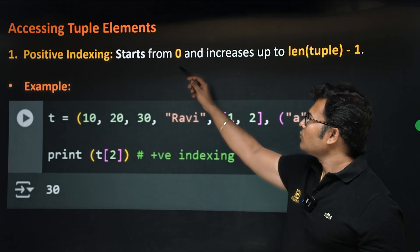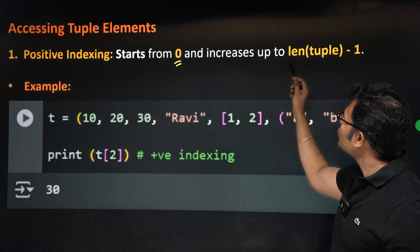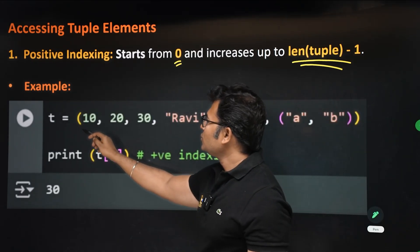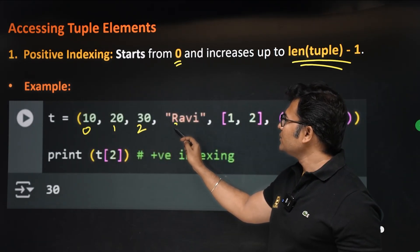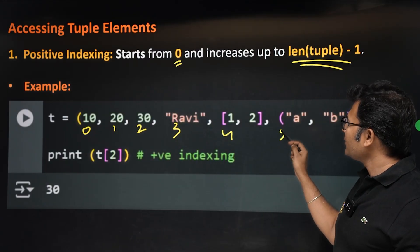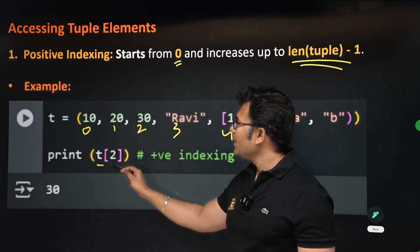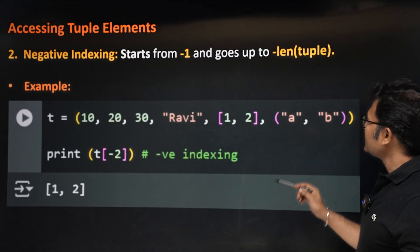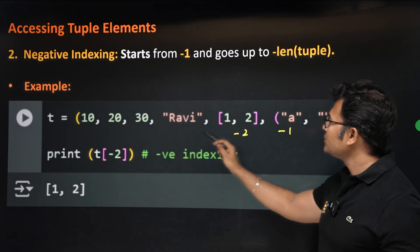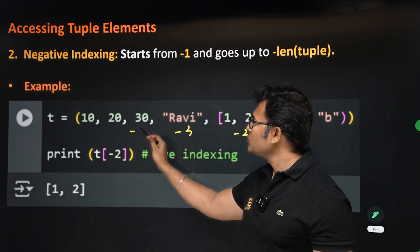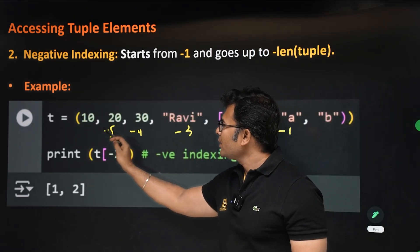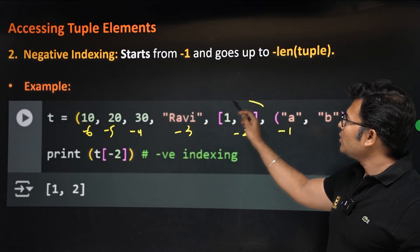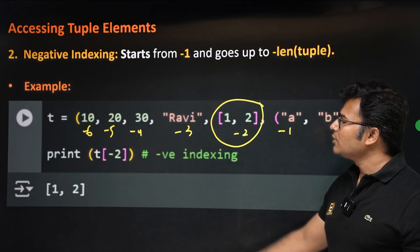Positive indices start from 0 and increase up to len−1. For example, indices 0, 1, 2, 3, 4, 5 — if you print t[2] then 30 is printed. For negative indices: −1, −2, −3, −4, −5, −6. When you print t[−2] it will print the second-to-last element.